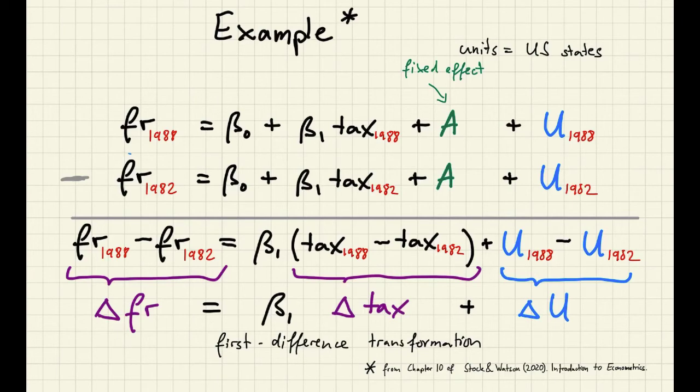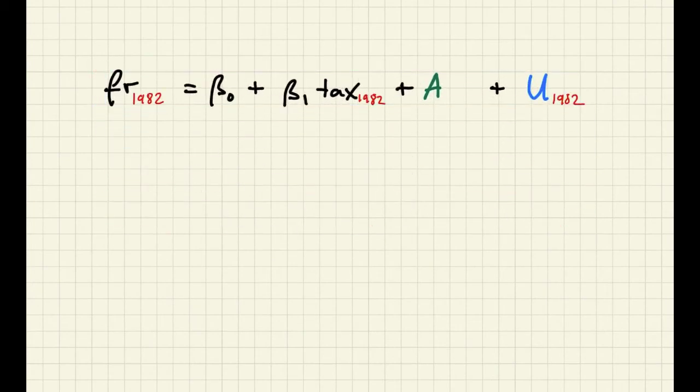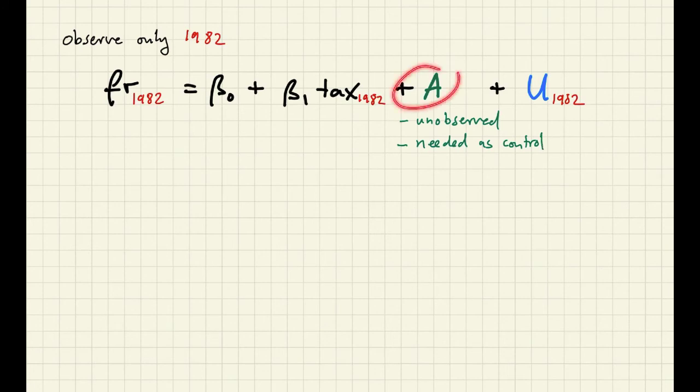Let's take a look at what we have accomplished here. First, suppose we observe only year 1982. Our fixed effect A is unobserved, and also we assume it's needed as a control variable. In other words, if we just put this into an error term, then we will have omitted variable bias. Now, if we observe 1982 and 1988, then we can compute the first difference transformation.